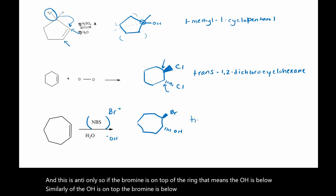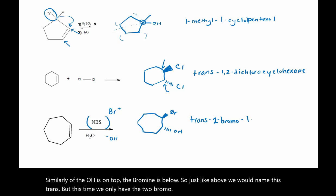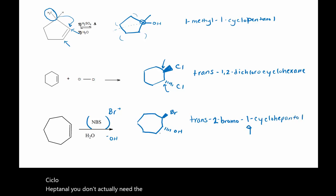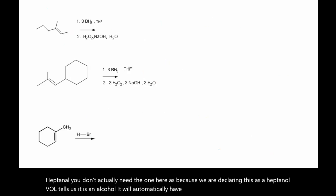So just like above, we would name this trans, but this time we only have the two-bromo-one-cycloheptanol. You don't actually need the one here because we are declaring this as a heptanol. The -ol tells us it is an alcohol, and it will automatically have the numerical preference.